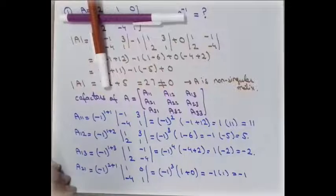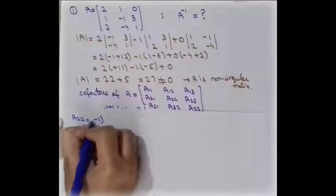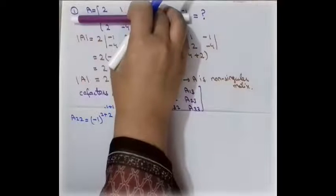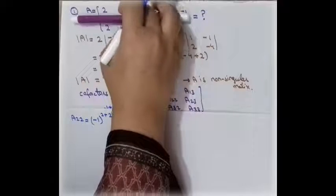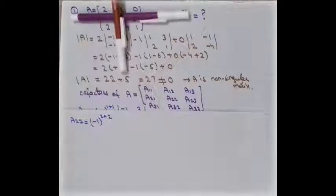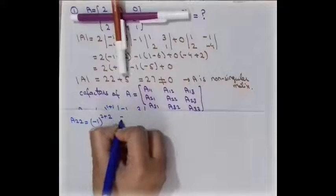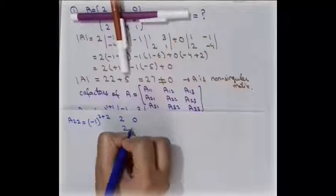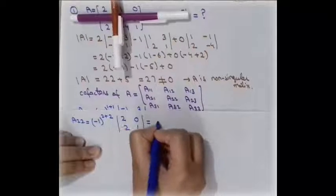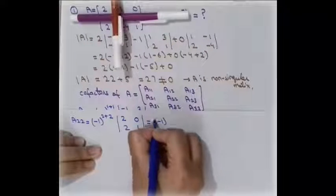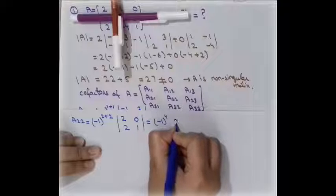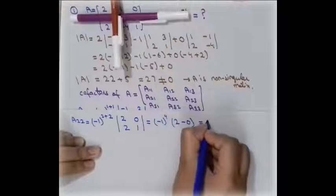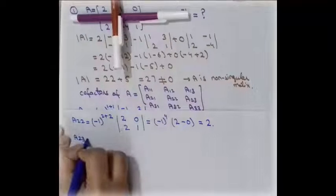For A22, with i+j = 2+2 = 4, we remove the corresponding row and column, leaving elements 2, 0, 2, 1. Solving: (-1)^4 × (2 - 0) = 1 × 2 = 2. So A22 = 2.